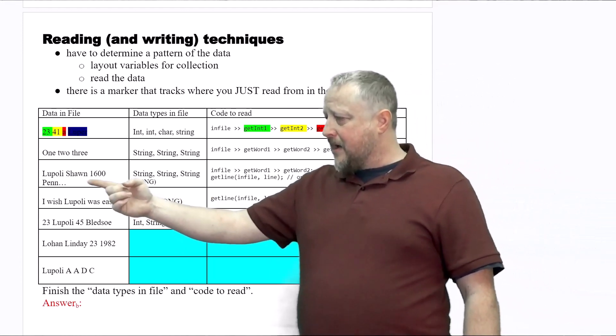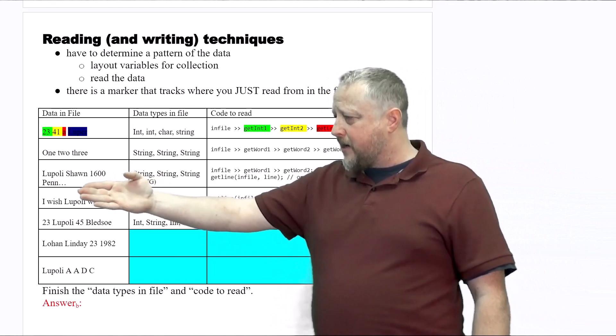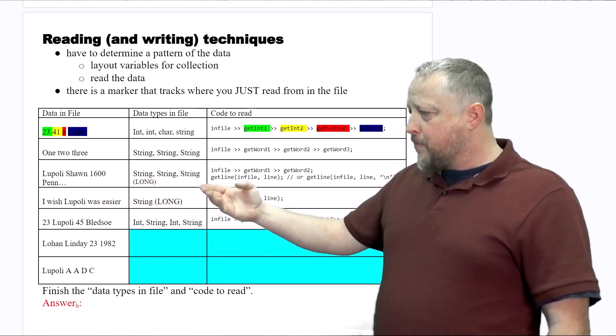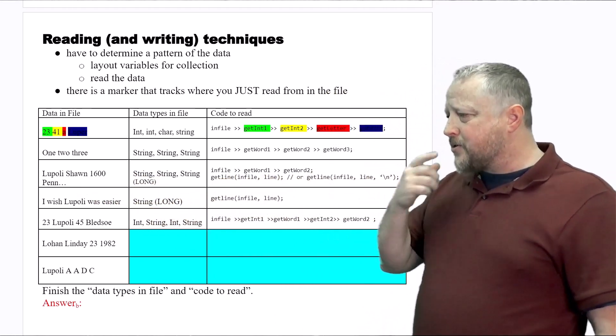Notice I have Sean Lepoli, 1600. I guess that's supposed to be Pennsylvania Avenue. But yeah, that 1600 is on the wrong line.